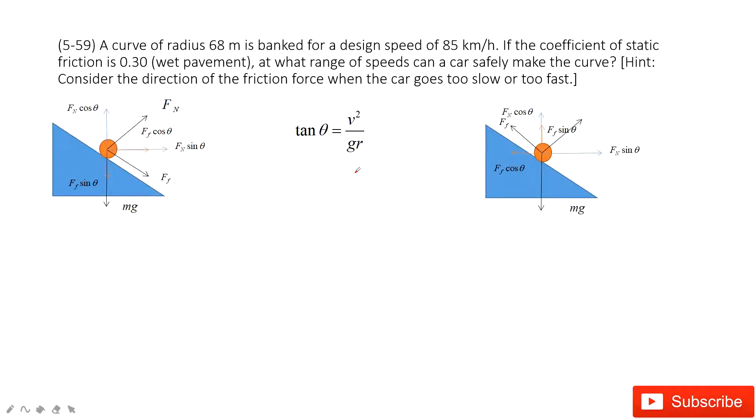Welcome to my channel. I'm Zhang Jingxu. Let's look at problem 59 in chapter 5. In this one, we need to find the range of speed the car can safely make the curve, and then we need to consider the static friction.